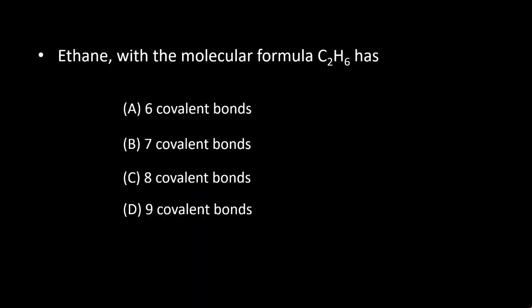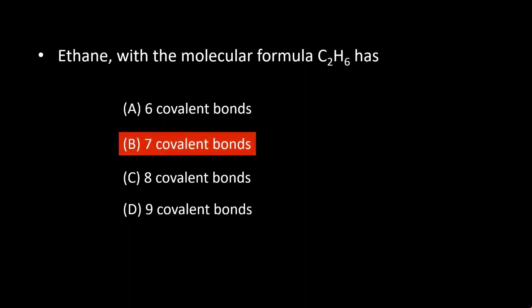Next: ethane with the molecular formula C2H6 has how many covalent bonds? Ethane has 7 covalent bonds. So option B, 7 covalent bonds, is the right answer.